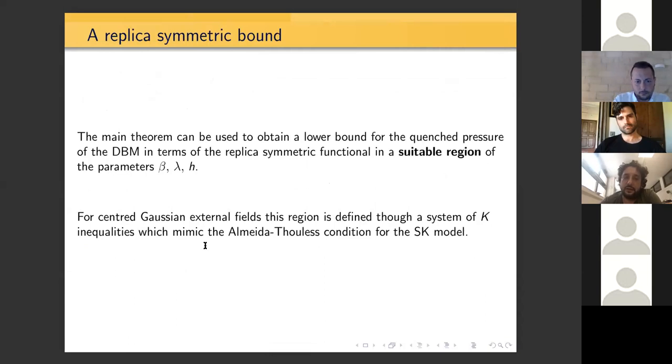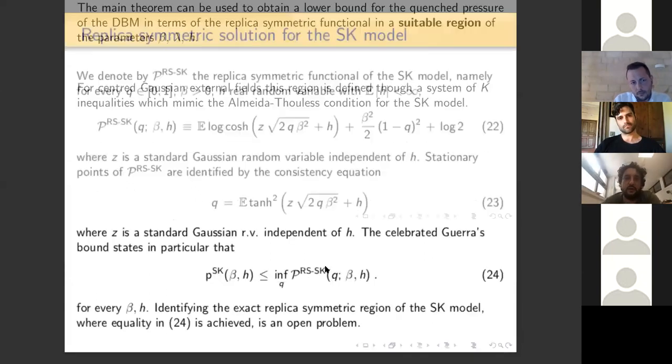Again, exploiting the fact that now we have good control on the SK model, we can use the previous bound to obtain a lower bound which is given in terms of a replica symmetric functional. But the point is that this bound doesn't hold for all choices of the parameter (β, λ, h), but only in a suitable region that you can determine. This suitable region is basically the analogous of the Almeida-Thouless condition for the SK model.